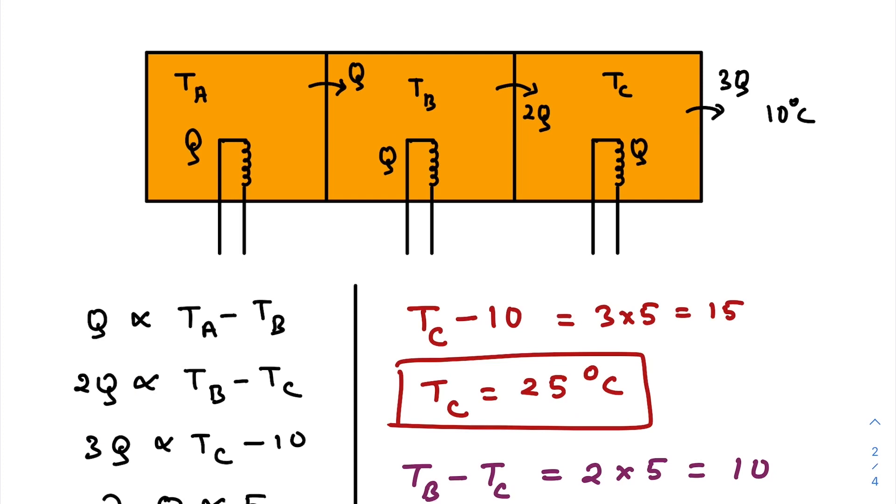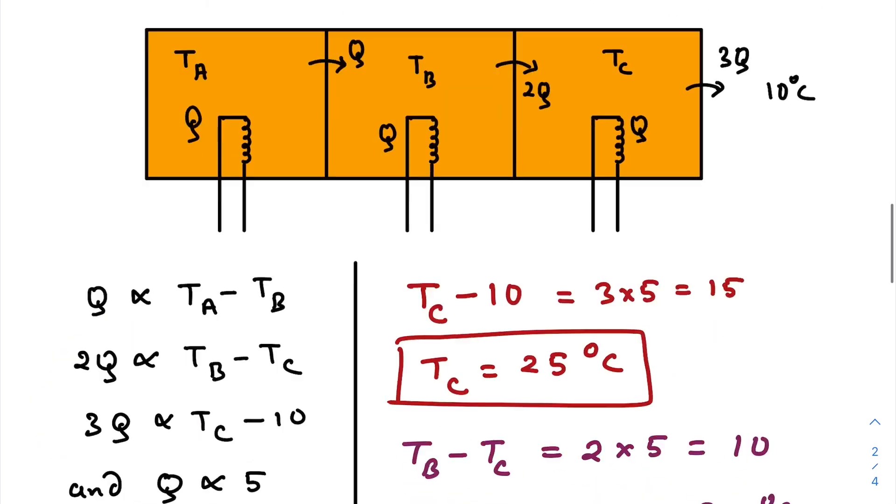Similarly, amount of heat of influx is 3Q, so the outflux should also be 3Q to maintain a stable situation. So 3Q is directly proportional to the difference of T_C and 10.